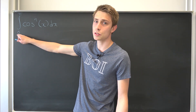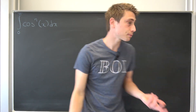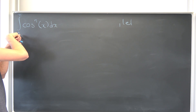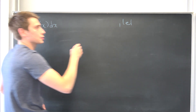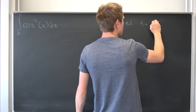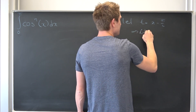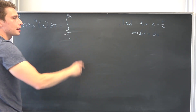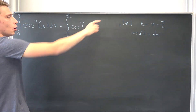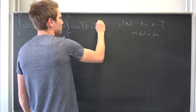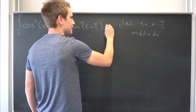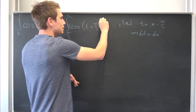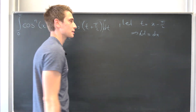We would like to have upper and lower bounds from negative pi over 2 to pi over 2. So let t be equal to x minus pi over 2, meaning dt is nothing but dx. We are going to arrive at the symmetric integral of cosine to the nth power of t plus pi over 2, dt.